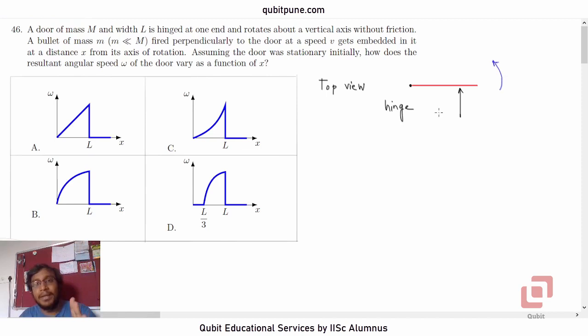The door will be rotating about an axis, the hinge axis which will be perpendicular to the screen. I hope you visualized it. They are saying that the door has mass M and the width is L. This is L.